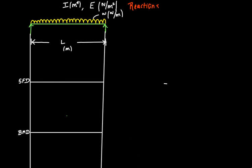There are two supports. We will say this is support A and this is support B. According to Newton's third law, the total load is equal to the reaction load — for every action there is an equal and opposite reaction. So the sum of the two reactions, RA plus RB, is equal to the total load. Over a span of L meters, the total load will be W into L. So this is our first equation.